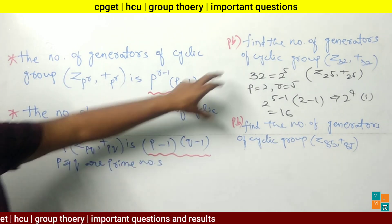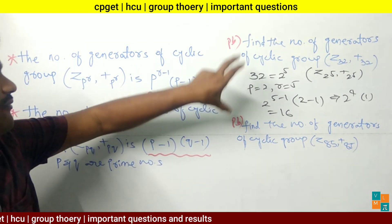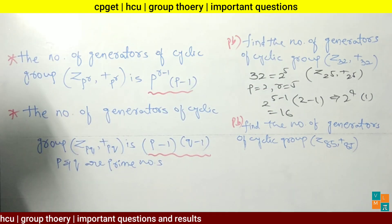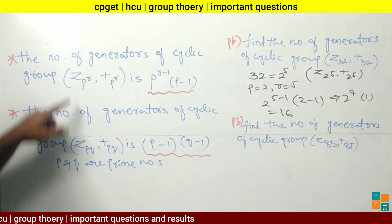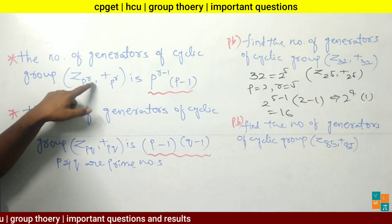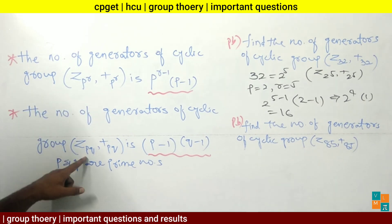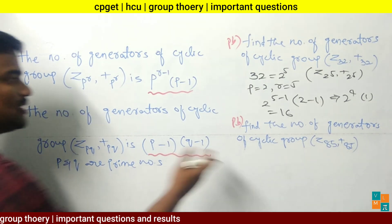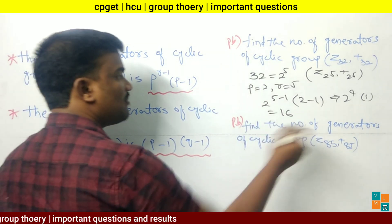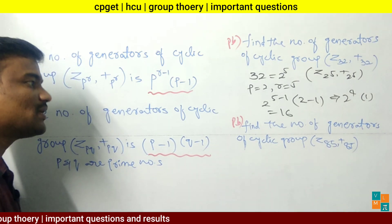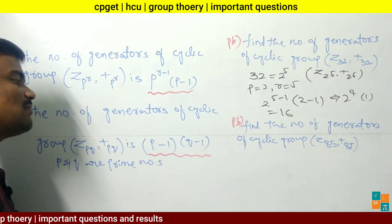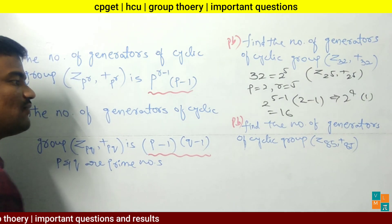These two are the problems of finding the number of generators of a cyclic group, but observe that the cyclic groups are in different forms: here Z(p^r), and here ZPQ. Now see this problem: find the number of generators of cyclic group Z85 with addition modulo 85.